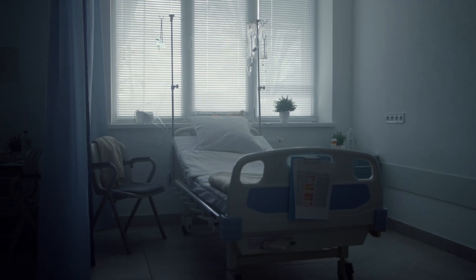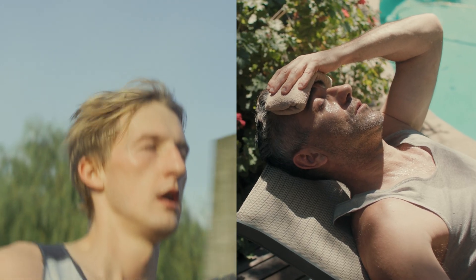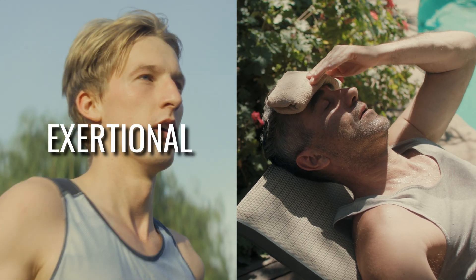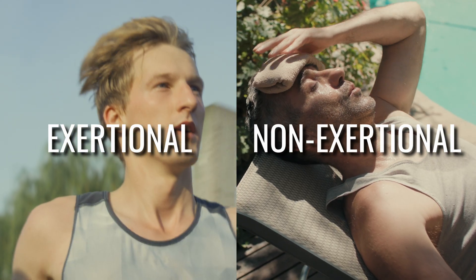Heat stroke survivors commonly exhibit long-term neurological and organ complications. Heat stroke itself is divided into two types, exertional and non-exertional heat illness. Although both result from the body's inability to prevent core temperature from rising, causal pathways are different.